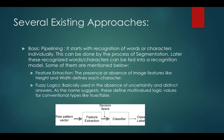Some of the most common OCR methods are: number one, feature extraction — the presence or absence of image features like height and width defines each character. The system matches image features of test data against trained data. Number two, fuzzy logic — used in the absence of uncertainty and distinct answers. These logics have multi-valued logic values for conventional types like true and false, though there must still be an absence of uncertainty. The image shows a raw pattern vector fed into a feature extraction system and then into a classifier.